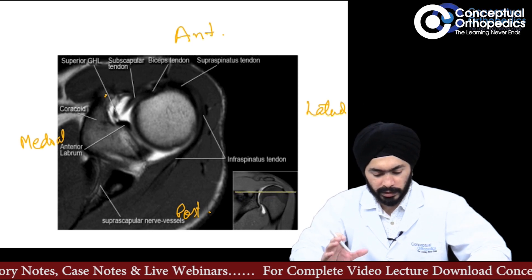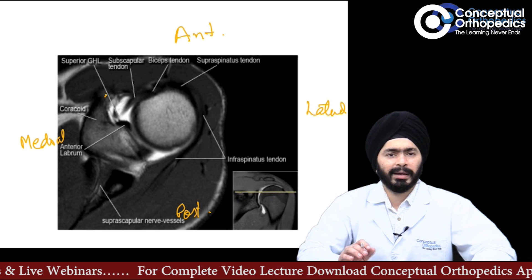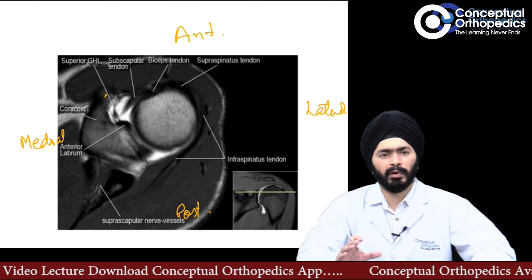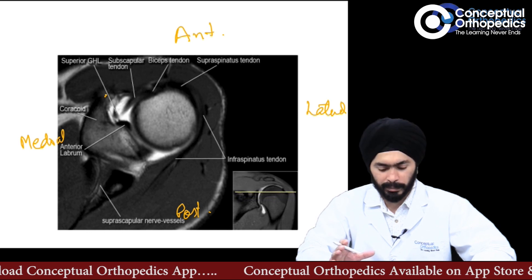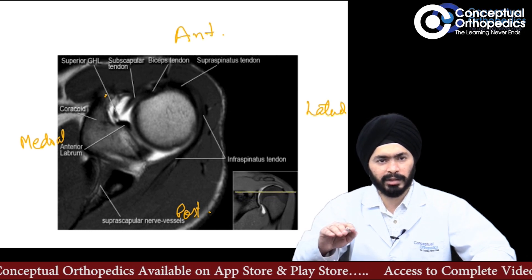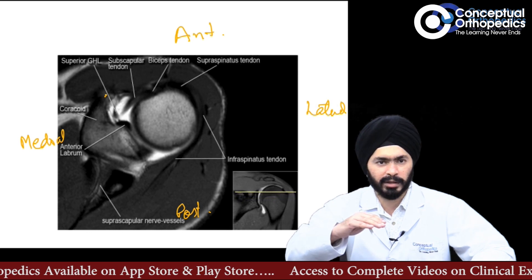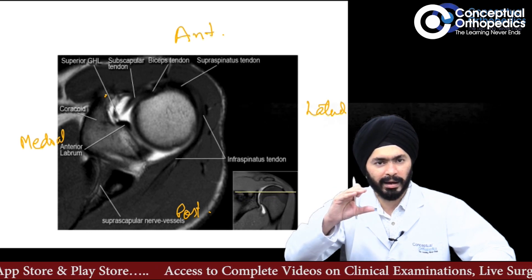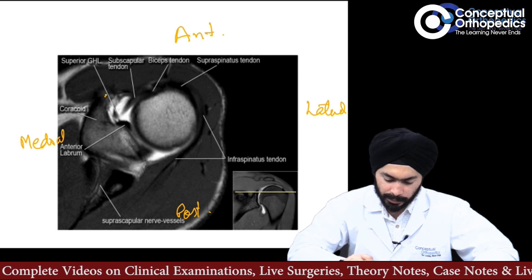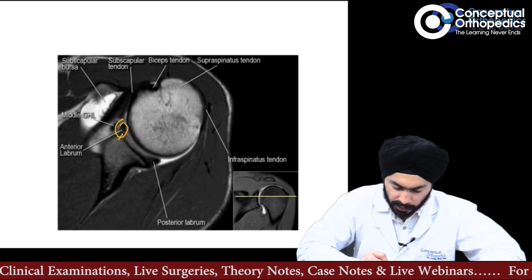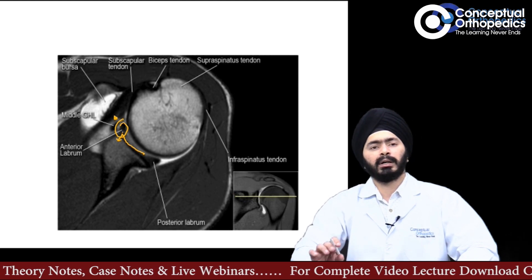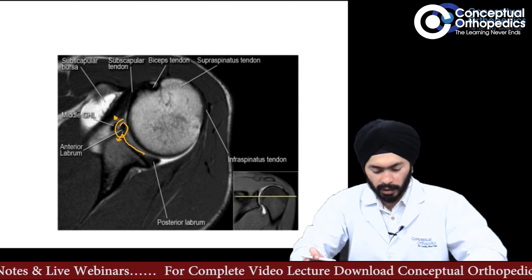On axial sections, what is important to look for is labral pathology — tears of the anterior or the posterior labrum. When looking for a Bankart lesion, which is a tear of the antero-inferior labrum, you want to look at the inferior sections. When the coracoid disappears from the axial sections, that means you have come into the inferior section — you are below the equator. If the anterior labrum is missing or torn in those sections, that indicates a Bankart lesion. The anterior labrum should be firmly attached to the glenoid; if it is detached or displaced, the glenoid labrum is torn anteriorly — that is your Bankart lesion.